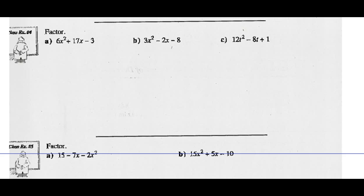Example 4: factor these three quadratic expressions. We have to use decomposition because the number in front of the X squared term is not 1. Ask yourself: what two numbers add to the middle term and multiply to 6 times negative 3, or negative 18?